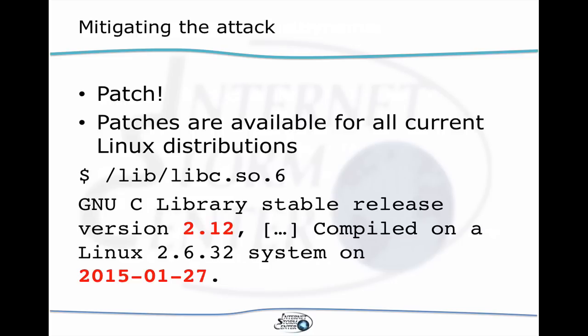How do you figure out what version of glibc you have? You can actually just run the library as an executable, as shown here, and it will return the version. It will also return the build date later in the output — it's a lengthy output, so I put ellipses where I left out part of it. On Linux, if you've patched the system, it will not update the version number but it will update the compiled-on date. In this case, this is a current CentOS system using glibc version 2.12, but it was built on January 27th — yesterday, when the patch was released.